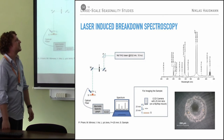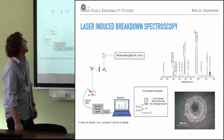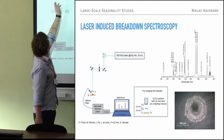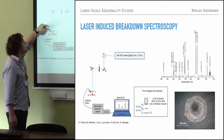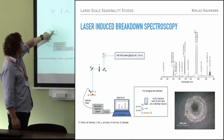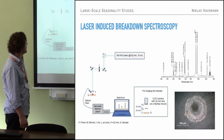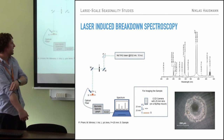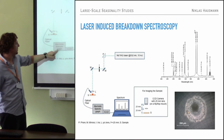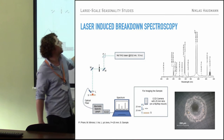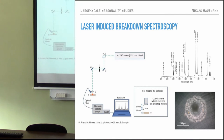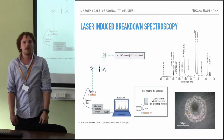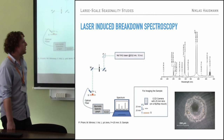Quick breakdown of how it works: you take a laser, shoot it through rings and mirrors to reach your sample. You focus the light and create plasma. The plasma emits light, which is collected and sent to a spectrograph, giving you the spectrum. From that spectrum you can see the elemental composition of whatever you ablated.